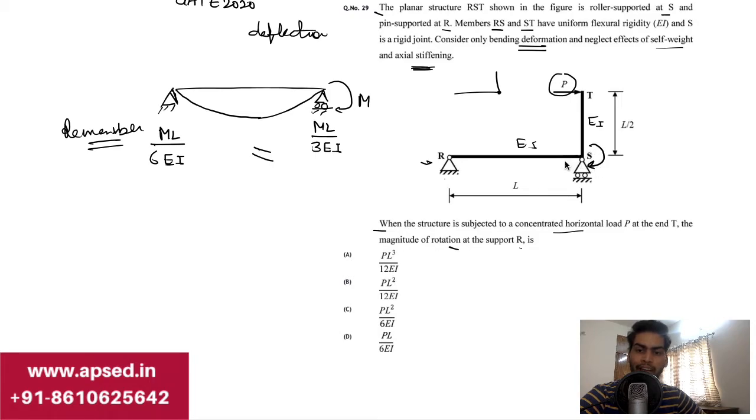We can apply a moment and a load P here. P is applied in this direction, and a moment it will cause is P times L/2, since the distance between T and S is L/2. So PL/2 is the value of M.